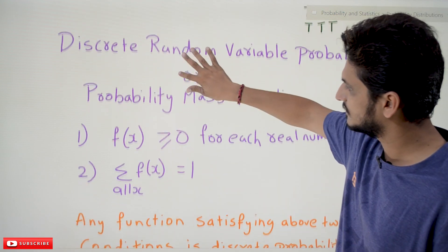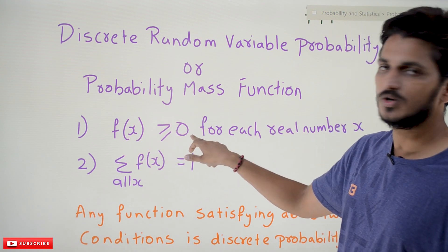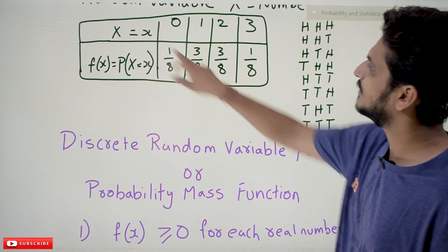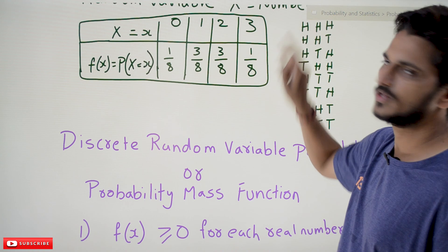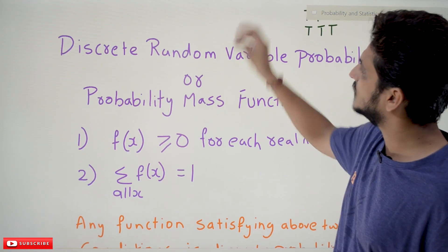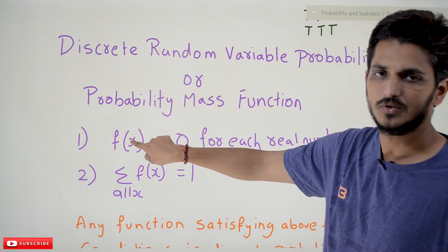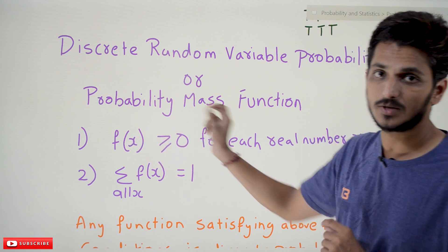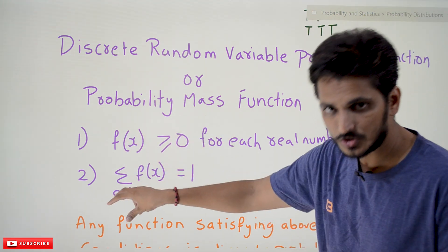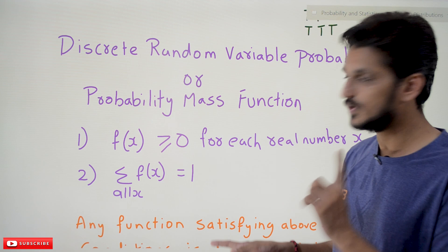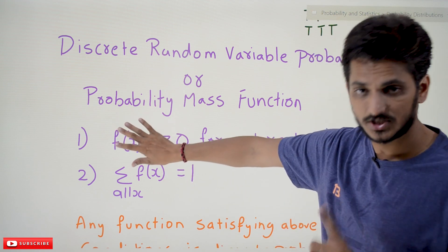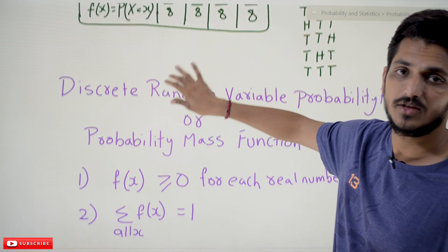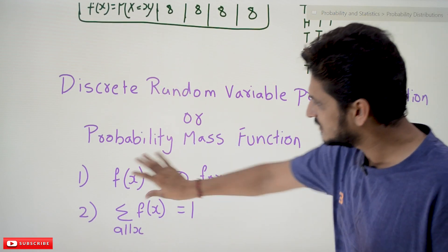The first condition is: f(x) must be greater than or equal to zero for each real number x. In our example, x takes values 0, 1, 2, 3. If you substitute 0 into the function, it should give a value greater than or equal to zero; similarly for 1, 2, and 3. This is the first condition satisfied by our probability mass function.